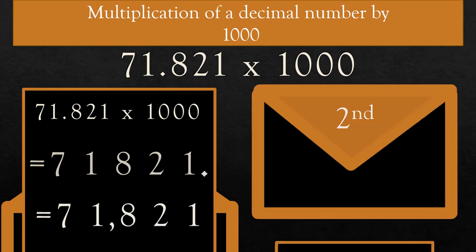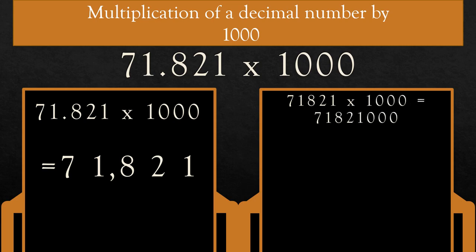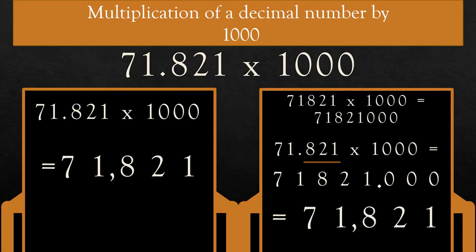Or in another way: multiply 71.821 × 1000, ignoring the decimal point. We know that 71,821 × 1000 is equal to 71,821,000. Now, how many digits after the decimal in 71.821? 3. So count three digits from the right — 1, 2, 3 — and place the decimal in the product. So the answer is 71,821.